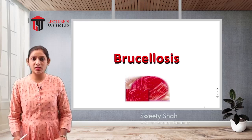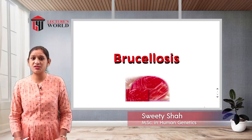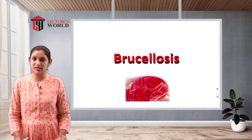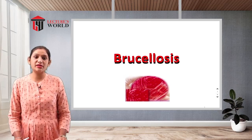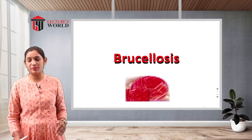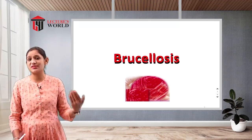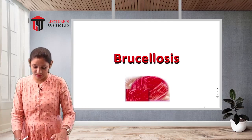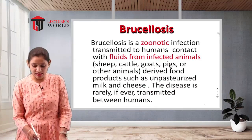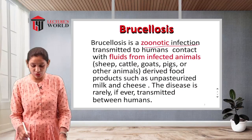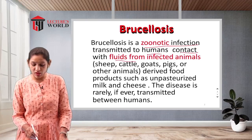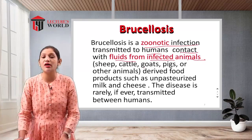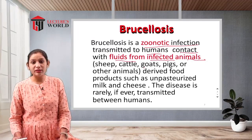Our next topic is Brucellosis, which is an animal-transmitted disease also called a zoonotic disease. Zoonotic means it is an animal-transmitted disease — the secretions and fluids from animals come into contact with humans. Brucellosis is a zoonotic infection transmitted to humans through contact with fluids from infected animals like sheep, cattle, goats, pigs, or other animals.